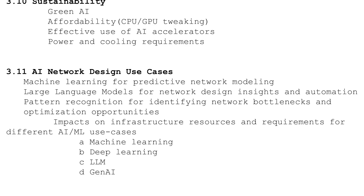Next, I will talk about AI network design use cases. In this section you will see practical examples of how AI, ML, and advanced models like large language models can provide predictive insights by taking historical data into account, recognizing patterns, and helping identify bottlenecks in your network. We will compare different AI-driven approaches — from machine learning and deep learning to generative AI — and understand their impacts on infrastructure, resource requirements, and optimization opportunities.